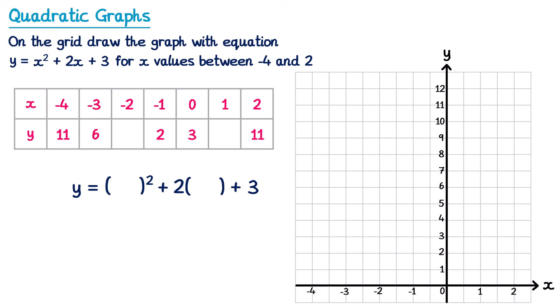Let's move along to when x is negative 2. We put negative 2 inside the brackets. So y equals negative 2 squared which is positive 4, plus two lots of negative 2 which is negative 4, and then plus 3. Four take away 4 is 0, and adding 3 gives 3. So y will be 3. When x is negative 2, y is 3, so we put 3 into the table.